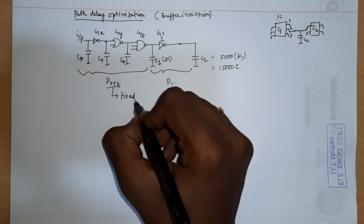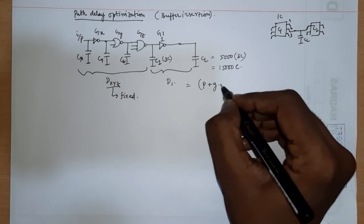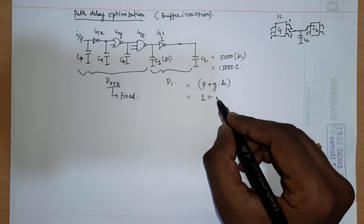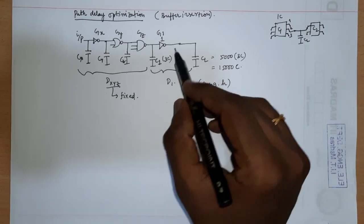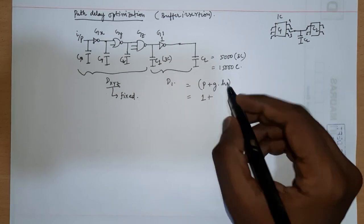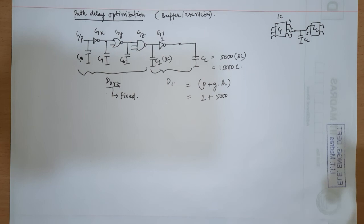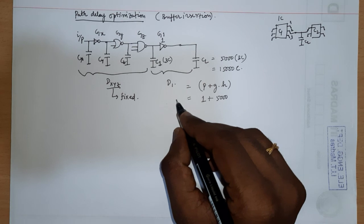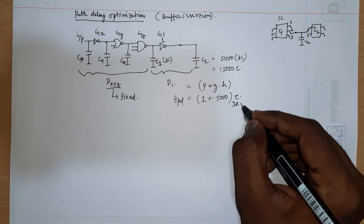Let me say dxyz is fixed and not going to change. D1 is the parasitic effort times logical effort times electrical effort. For an inverter, the parasitic effort is one and the logical effort is one. The electrical effort is how big the load is compared to the gate itself — since the gate is size one, its capacitance is 3C, and the load is five thousand times 3C, giving an electrical effort of five thousand. So the normalized delay D1 is approximately five thousand. Multiplying by tau (which is 3RC) gives the actual delay.